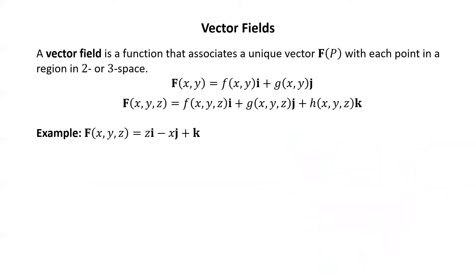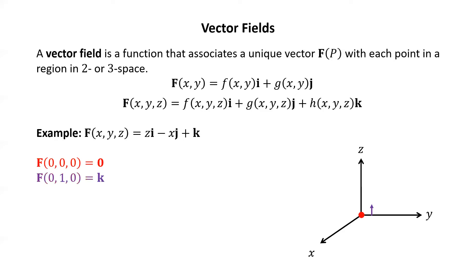Let's try an example in three-dimensional space. F of XYZ equals Z times i minus X times j plus k. You may want to pause the video and plug in a few different points, draw the corresponding vectors in three-dimensional space, then resume to see the examples. F of (0,0,0) is simply the zero vector, so I put a point at the origin. F of (0,1,0): plugging in 0 for X, 1 for Y, and 0 for Z, we get 0i minus 0j plus k, which is just k. Starting at the point (0,1,0) along the Y axis, I draw the vector k which points straight up in the Z direction, one unit.